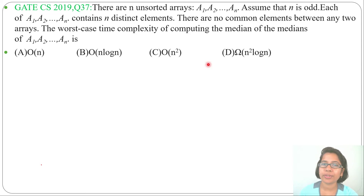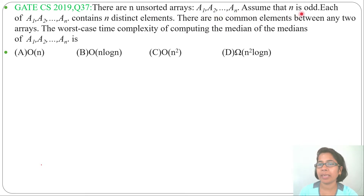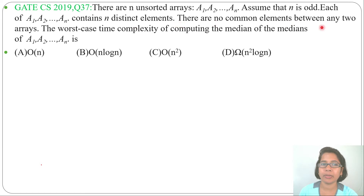Let's solve a previous question on algorithm analysis. This question was asked in GATE CS 2019, question number 37. There are n unsorted arrays A1, A2, up to An. Assume that n is odd. Each of A1, A2, up to An contains n distinct elements, and there are no common elements between any two arrays. The worst case time complexity of computing the median of the medians of A1, A2, up to An is asked, and four options are given.